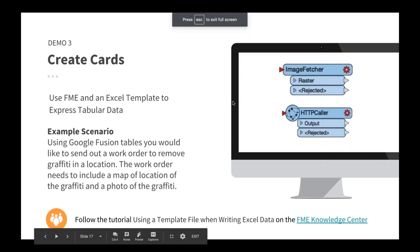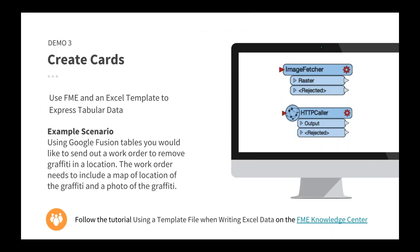One feature people really liked about Google Fusion Tables was the ability to make cards. FME has similar functionality: you can use an Excel template and write your data to that template repeatedly. This demo takes data from Google Fusion Tables, extracts images from it, creates maps using those coordinates, and writes everything out to a work report using an Excel template.